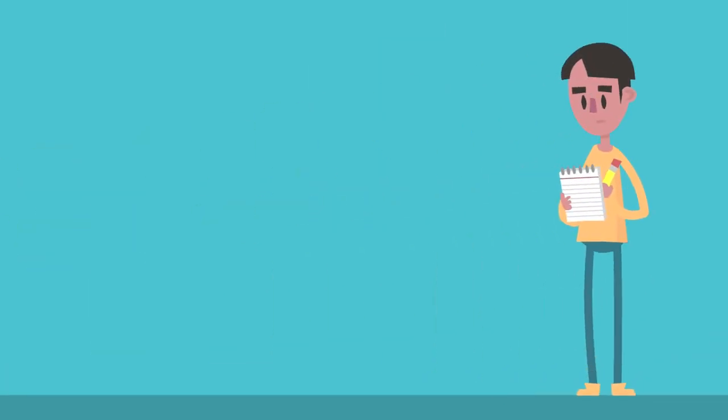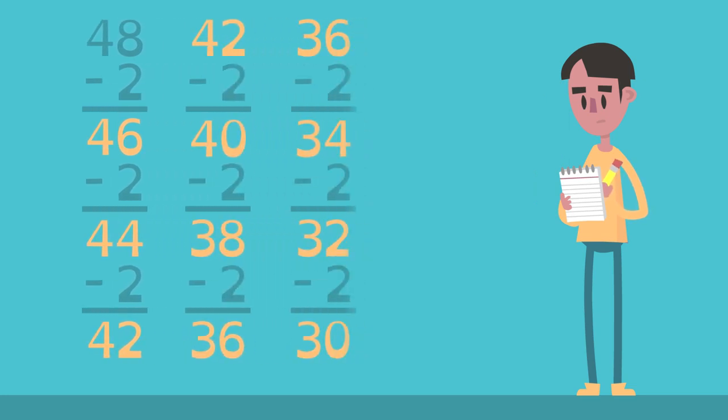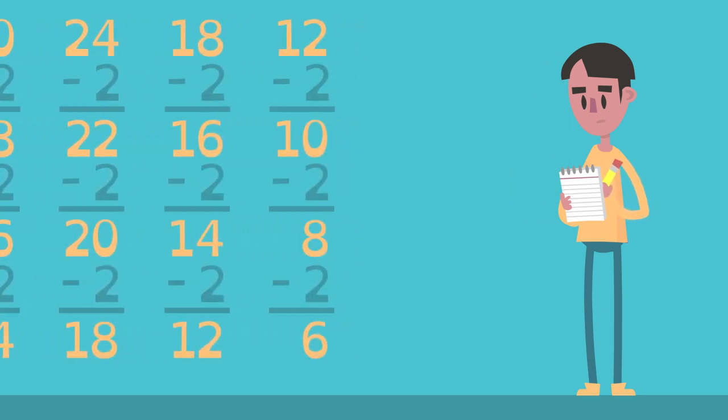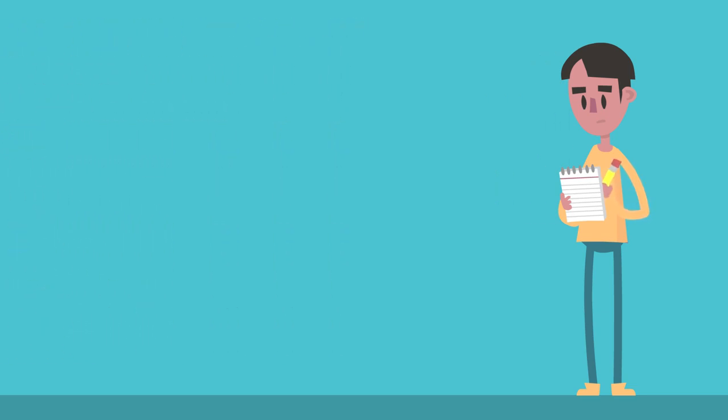He can find the answer through simple subtraction, 48 cups minus 2 each day until six cups remain. This method takes too much time. Is there a faster way? Yes!